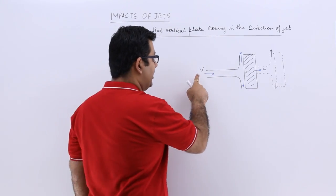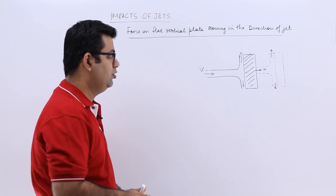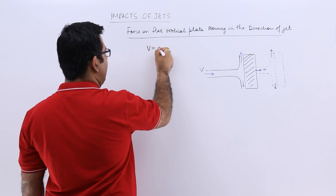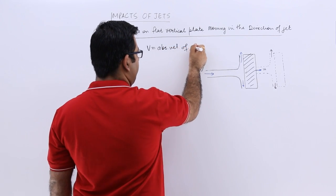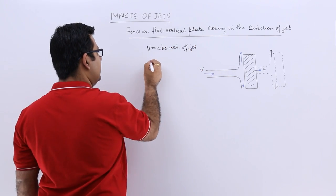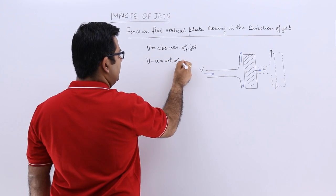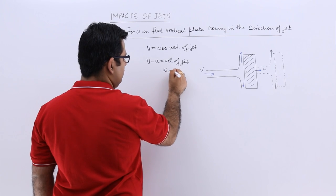So you will have a relative motion between the jet and the plate. Capital V is the absolute velocity of jet, and v minus u is the velocity of jet with respect to plate.